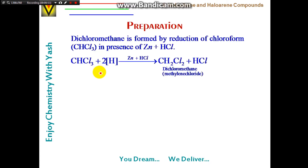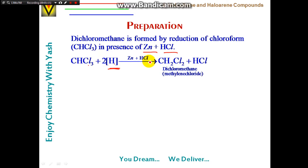Dichloromethane is formed by reduction of chloroform (CHCl₃) in the presence of Zn and HCl. The metal reacts with acid to form hydrogen; one hydrogen reacts with one chlorine to remove HCl, and the other hydrogen joins to give dichloromethane (methylene chloride).